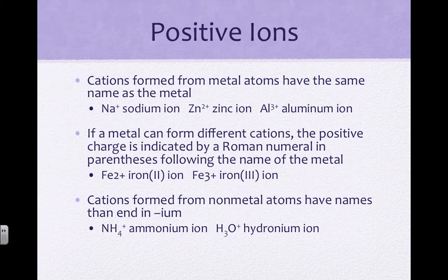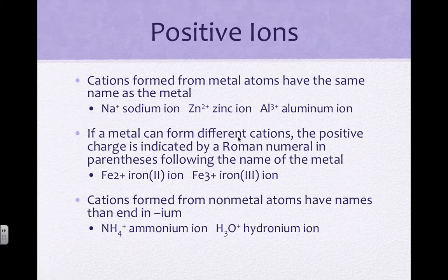In terms of positive ions — cations — when we name them, they have the same name as the original metal. So Na+ is still sodium, Zn2+ is zinc, and Al3+ is aluminum. However, if a metal is polyionic, meaning it can have more than one charge, then we use the stock name — we put the magnitude of the charge in parentheses using Roman numerals.